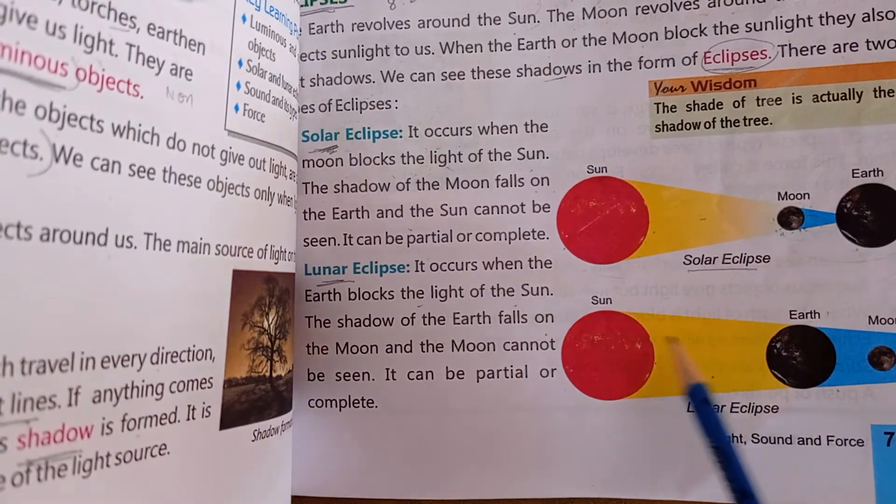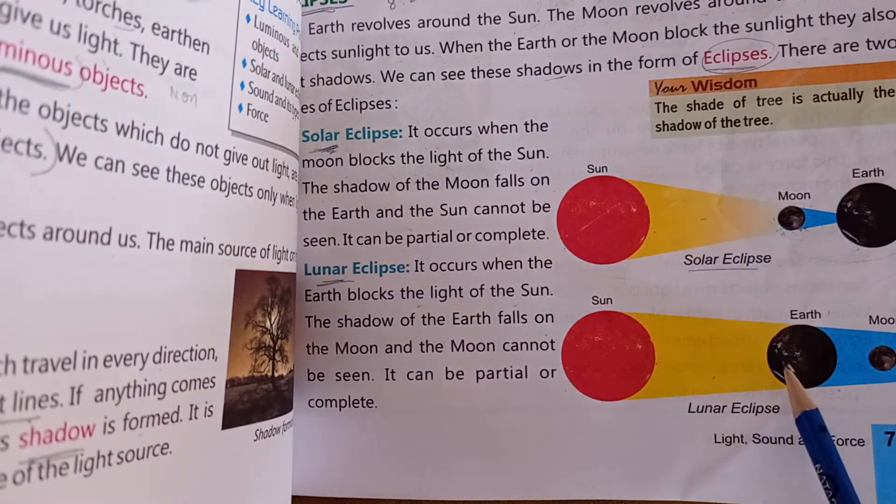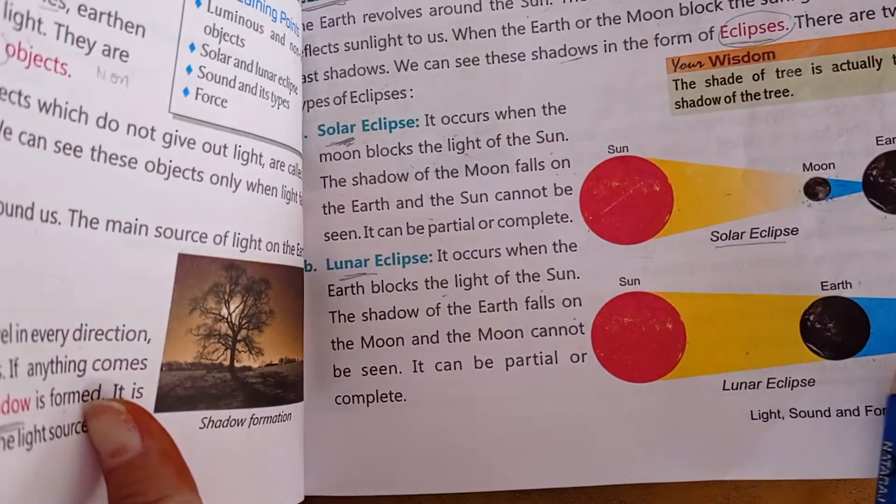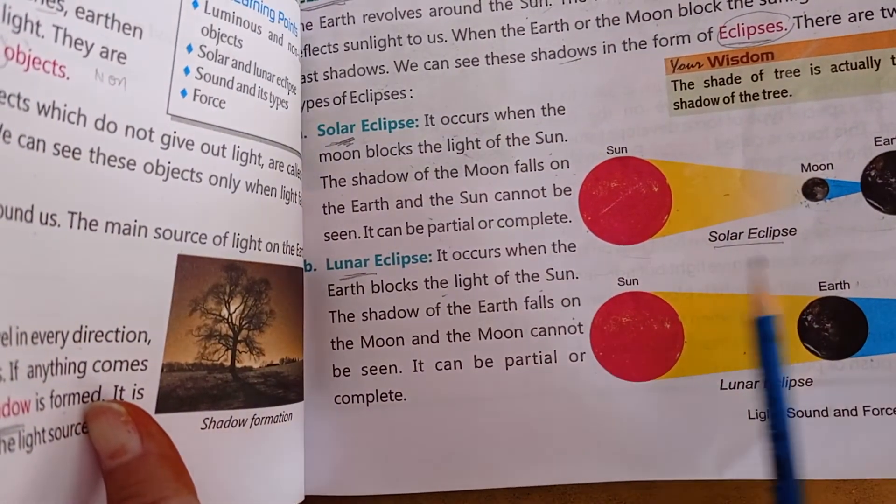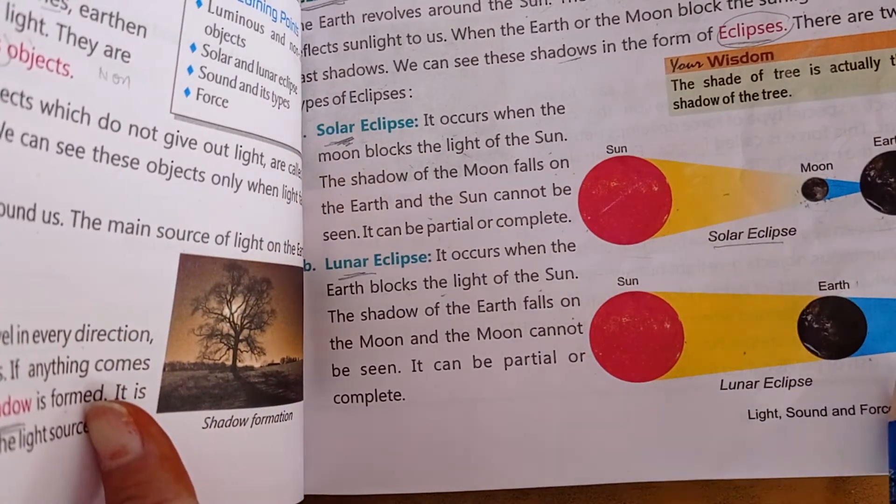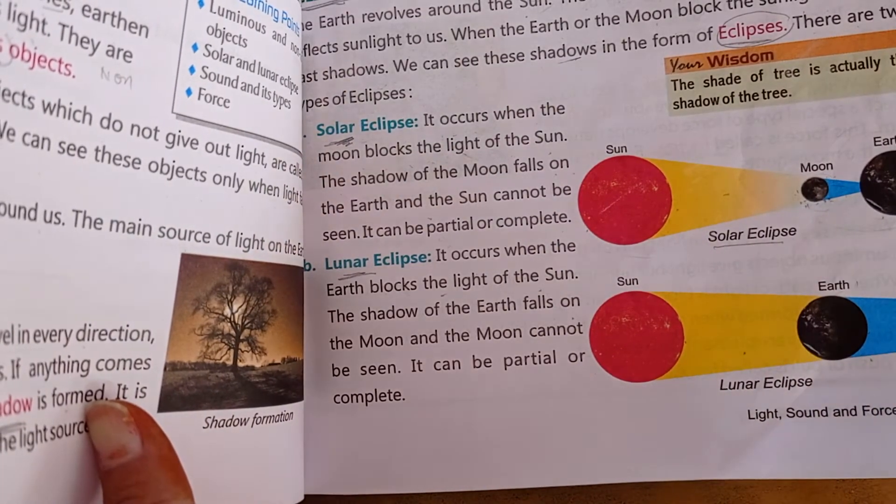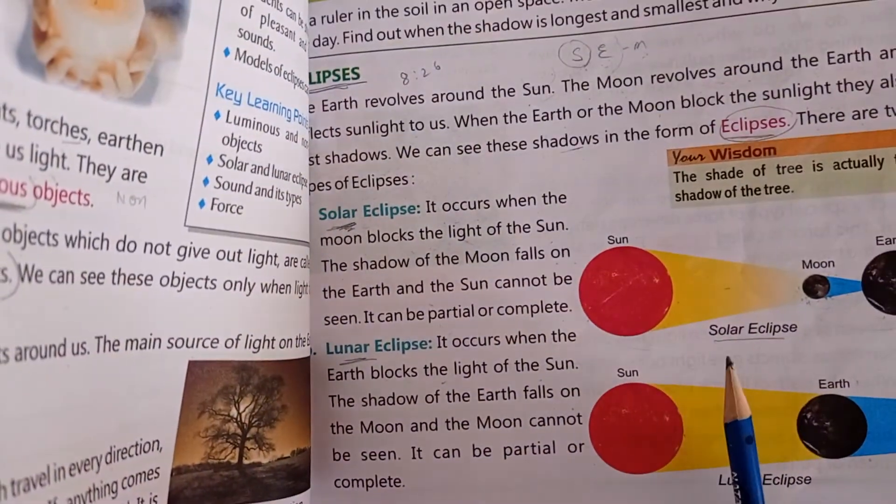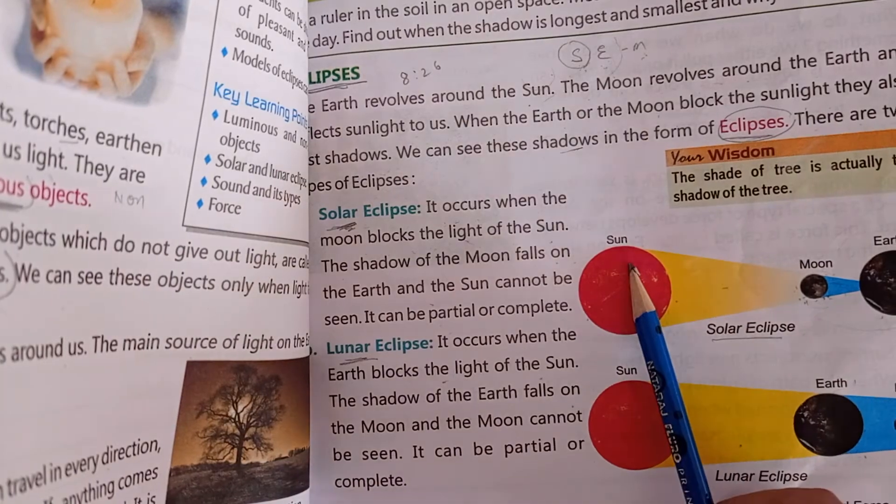What is a lunar eclipse? When the earth is placed between the sun and moon, the light from the sun does not fall on the moon, and the moon becomes dark completely. Then which eclipse occurs? This is called a lunar eclipse.